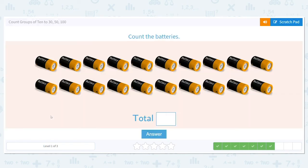Let's try another. This time we have batteries. Let's count our first row. 1, 2, 3, 4, 5, 6, 7, 8, 9, 10.